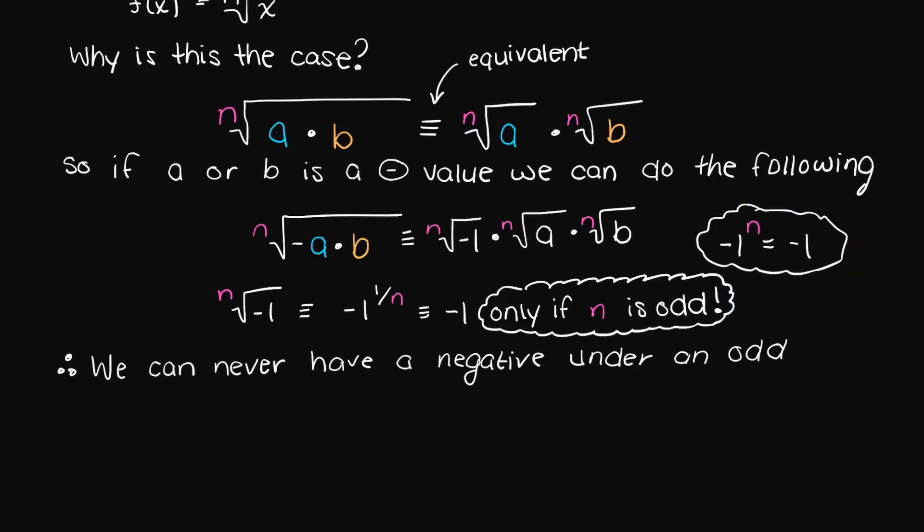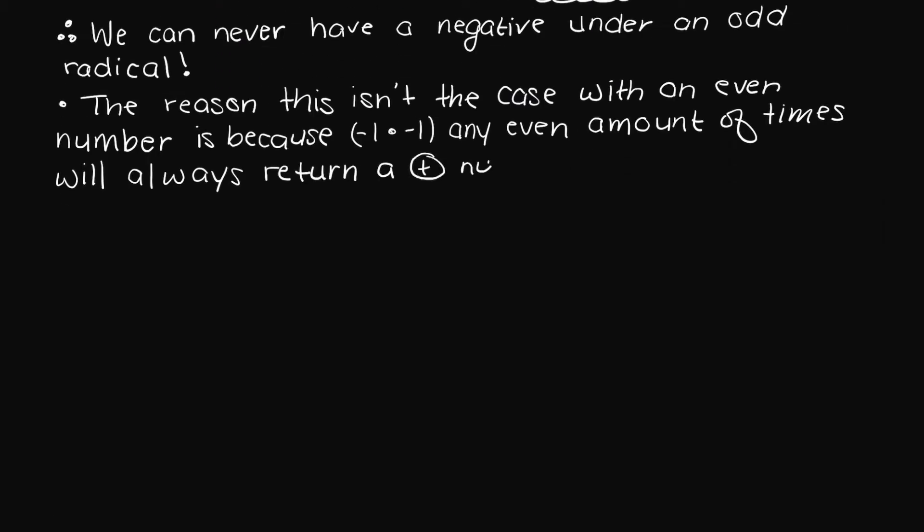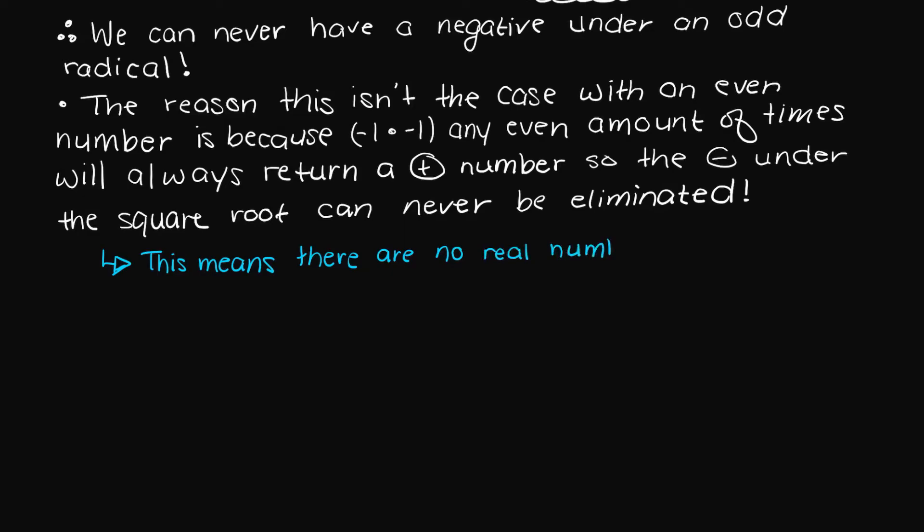The reason this isn't the case with an even root term is because we can never multiply two of the same numbers together to get a negative value. So even if we take out a negative value under an even root, there are no two real numbers we can multiply together to ever get a negative, and therefore the domain of the function will be affected as the negative under the radical cannot be removed.